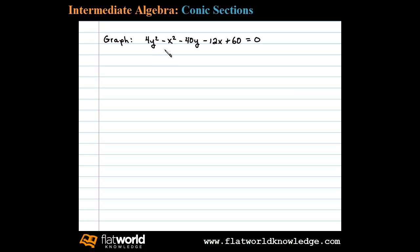We're asked to graph 4y² - x² - 40y - 12x + 60 = 0. I notice this is an equation of a hyperbola, and since the leading coefficient for y² is positive, this hyperbola opens upward and downward. Let's begin by rewriting this in standard form.